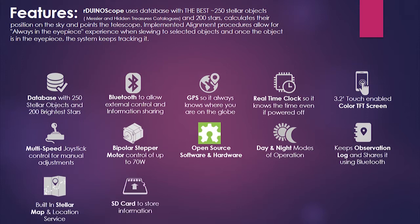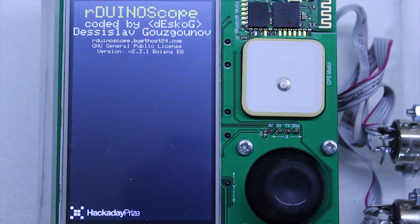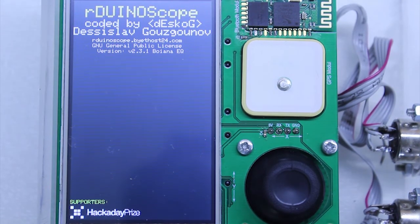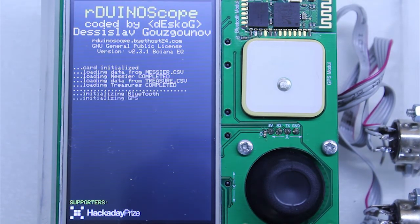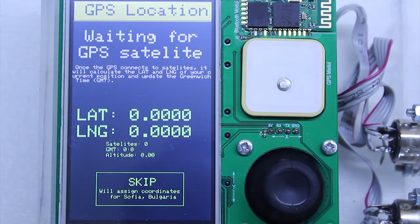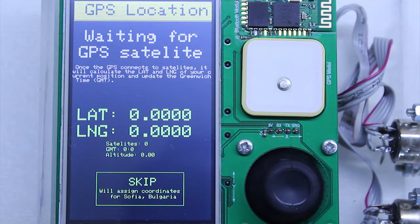ArduinoScope is a standalone device. This means that you only need a small grab-and-go package for your telescope without compromising on features. Let's see how it works. ArduinoScope starts by initializing components and checking hardware. It also shows logos of supporters of the ArduinoScope project. The system then tries to read GPS data. The screen will refresh every 10 seconds until it captures coordinates and automatically progresses to the next view.